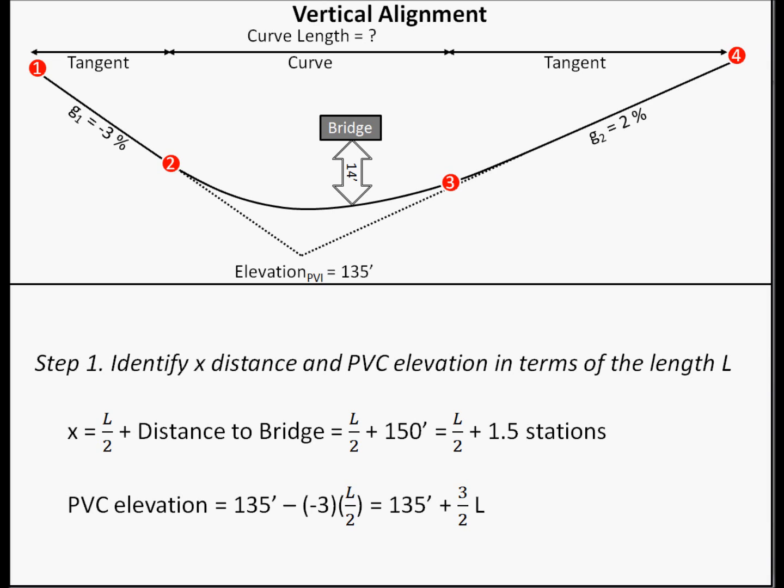Again, we don't know the precise location of the PVC yet, so we can't find the exact PVC elevation. We can specify it in terms of the length of the curve though. Based on the elevation of the PVI, which we know is 135 feet, to reach the PVC we need to travel up the 3% grade, half of the length of the curve, to reach the PVC. Our final equation is that the PVC elevation equals 135 plus 3 divided by 2 times L, where L is input in stations.